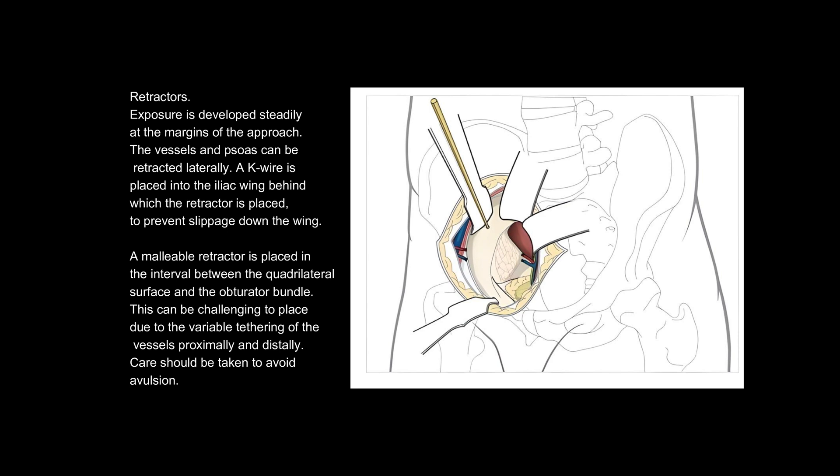Exposure is developed steadily at the margins of the approach. The vessels and psoas can be retracted laterally. A K-wire is placed into the iliac wing behind, which the retractor is placed, to prevent slippage down the wing. A malleable retractor is placed in the interval between the quadrilateral surface and the obturator bundle. This can be challenging to place, due to the variable tethering of the vessels proximally and distally. Care should be taken to avoid avulsion.